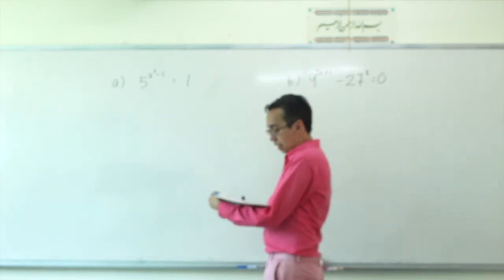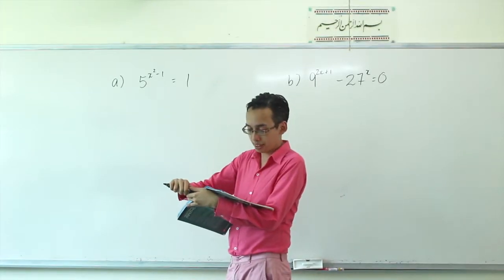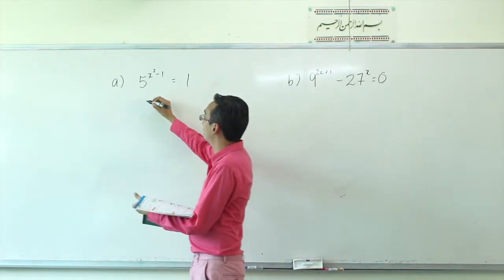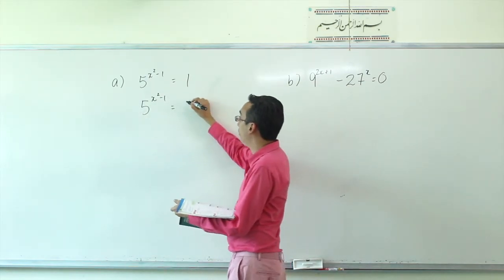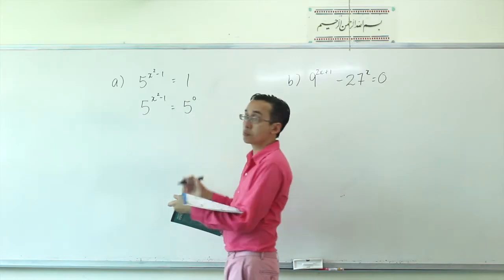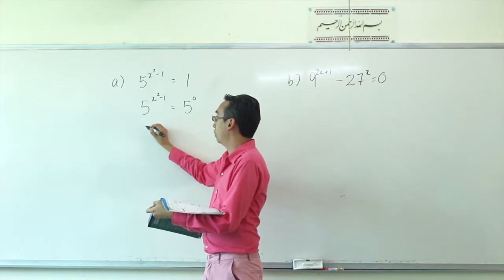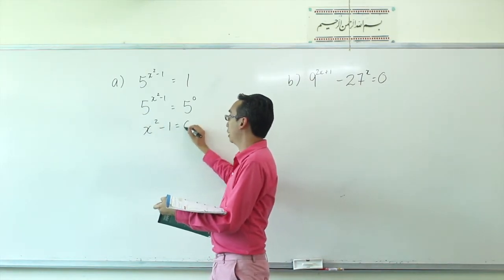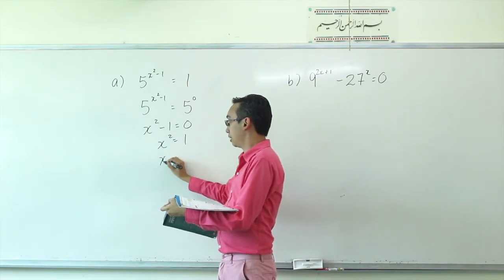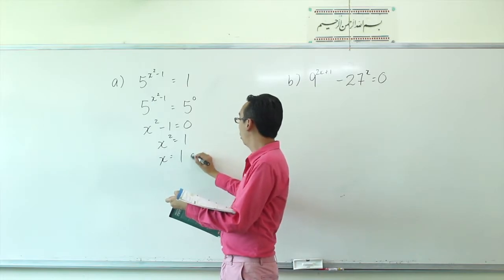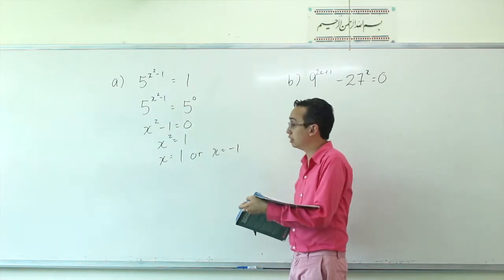So let's take a look at this question. We have 5 to the power of X squared minus 1, equals 1. We know that 1 is actually 5 to the power of 0. Once we make them both base 5, we can remove the base and see that the indices must be the same. Solving normally, we get X equals 1 or X equals negative 1. A rather simple question.